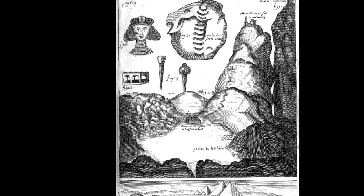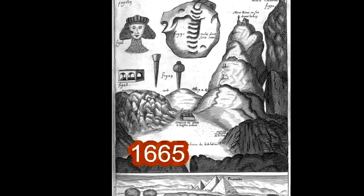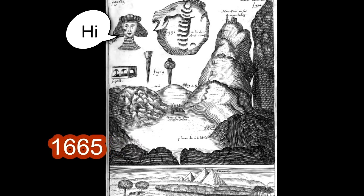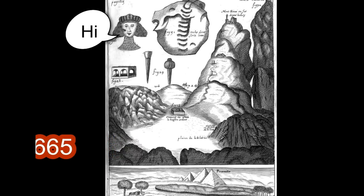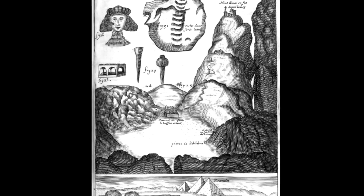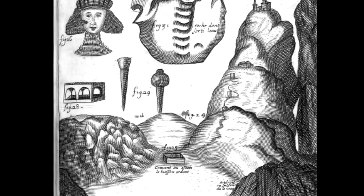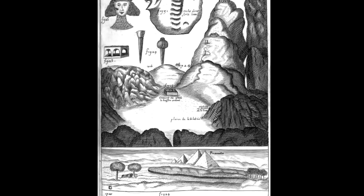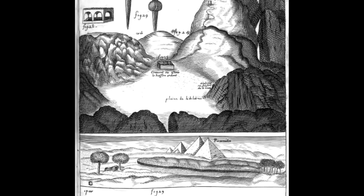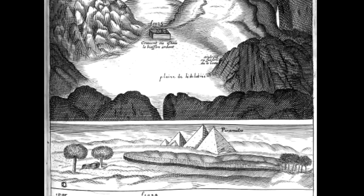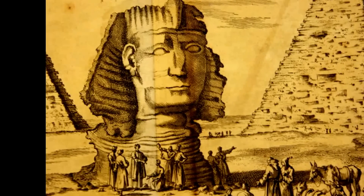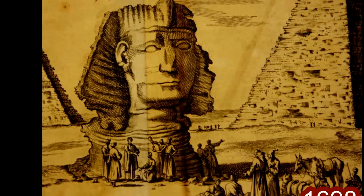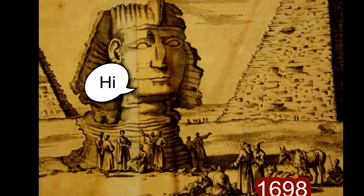In 1665 again, a different rendition shows the Sphinx as a more feminine figure with a headdress, yet the face still looks like a European male. You also have what looks like a city on the cloud.